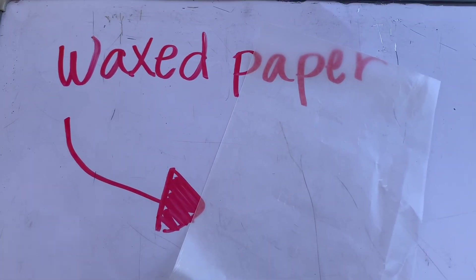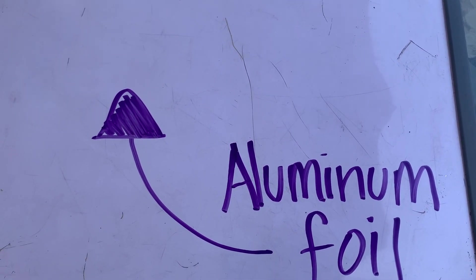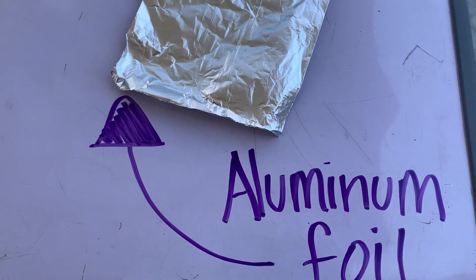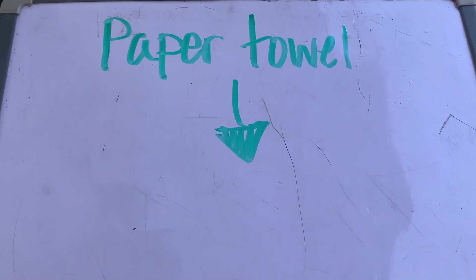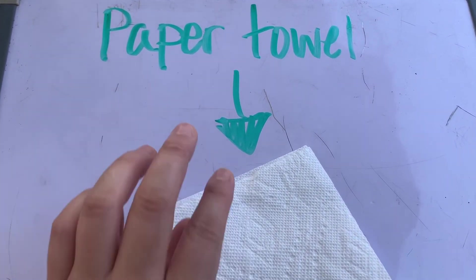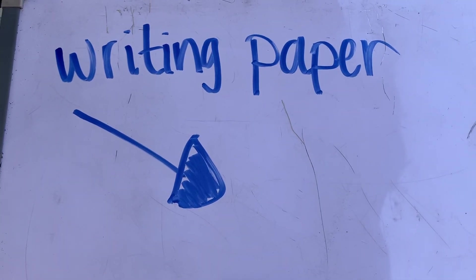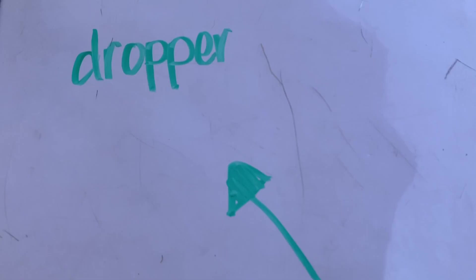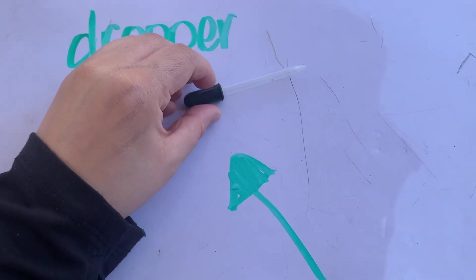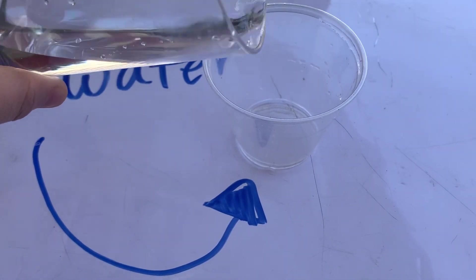So our surfaces were waxed paper, aluminum foil, paper towel, and writing paper. We also use a dropper, and of course can't forget our H2O, our water.